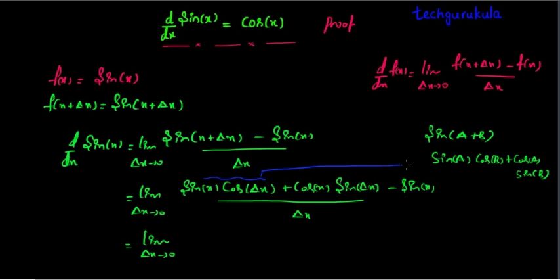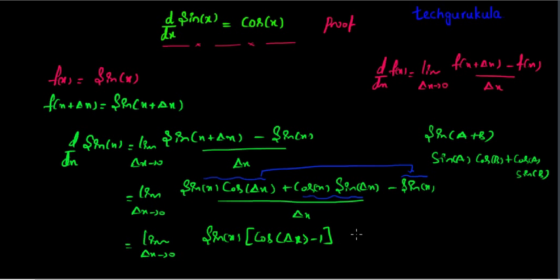We have the third term — take sin of x common on the first and third term, and we will have cos of Δx minus 1, plus cos x sine Δx.